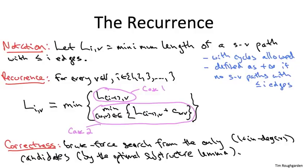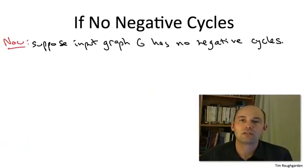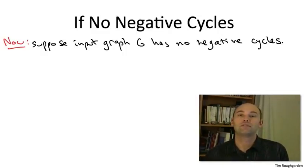So now let's see how it's useful to assume that the input graph G does not have a negative cycle. We had a quiz not too long ago that discussed the use of the no negative cycles hypothesis. In particular, we argued that N minus one edges are always enough to capture a shortest path between S and any possible destination.